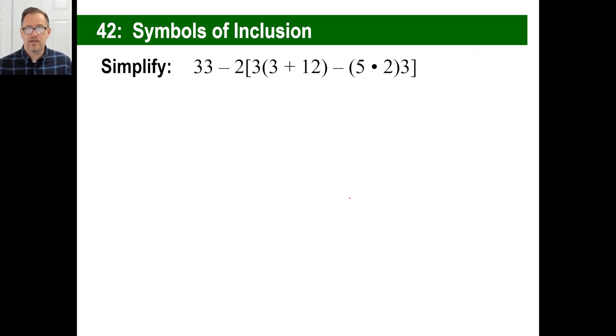Looks kind of complicated, but just do it again and again. Here's another one. Pause and copy. I'm going to copy down my 33 again, and my minus 2, and the bracket. Let's get this part done first. So I'm going to go 3 times 15 minus, and then this part first. We could do this probably all at once if you want to. 5 times 2 is 10, times 3 is 30. 33 minus 2, 3 times 15 is 45 minus 30. And then 33 minus 2 times 15 is 30. And that's the answer is 3.